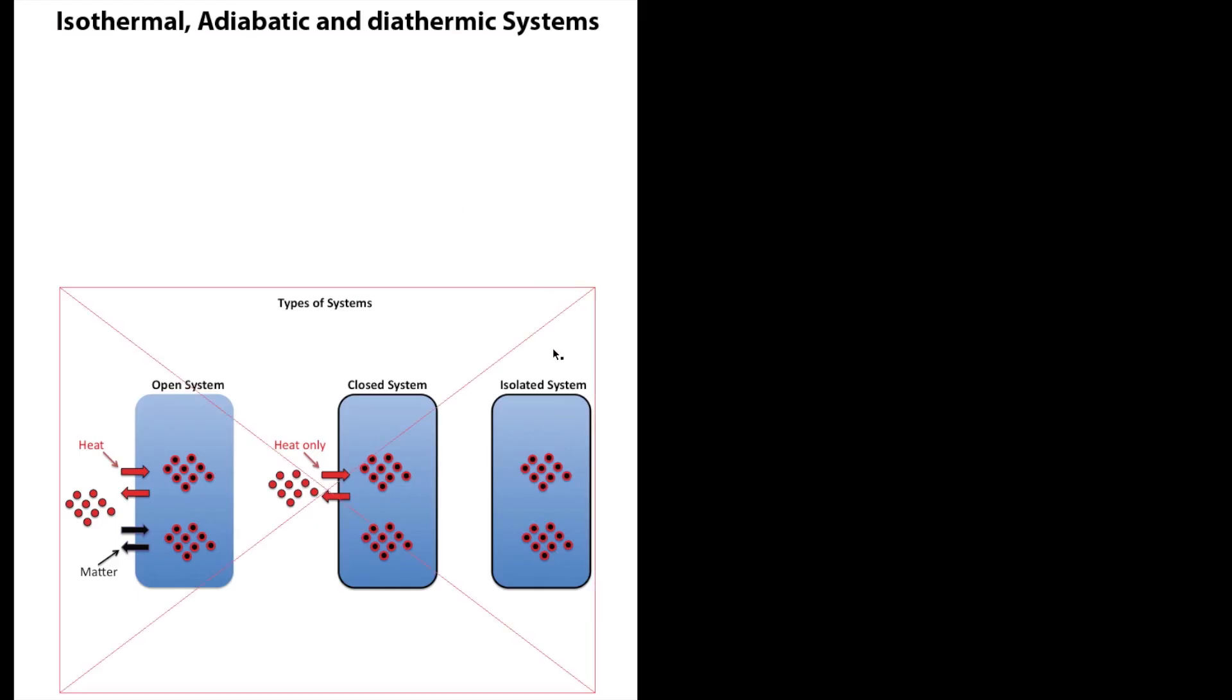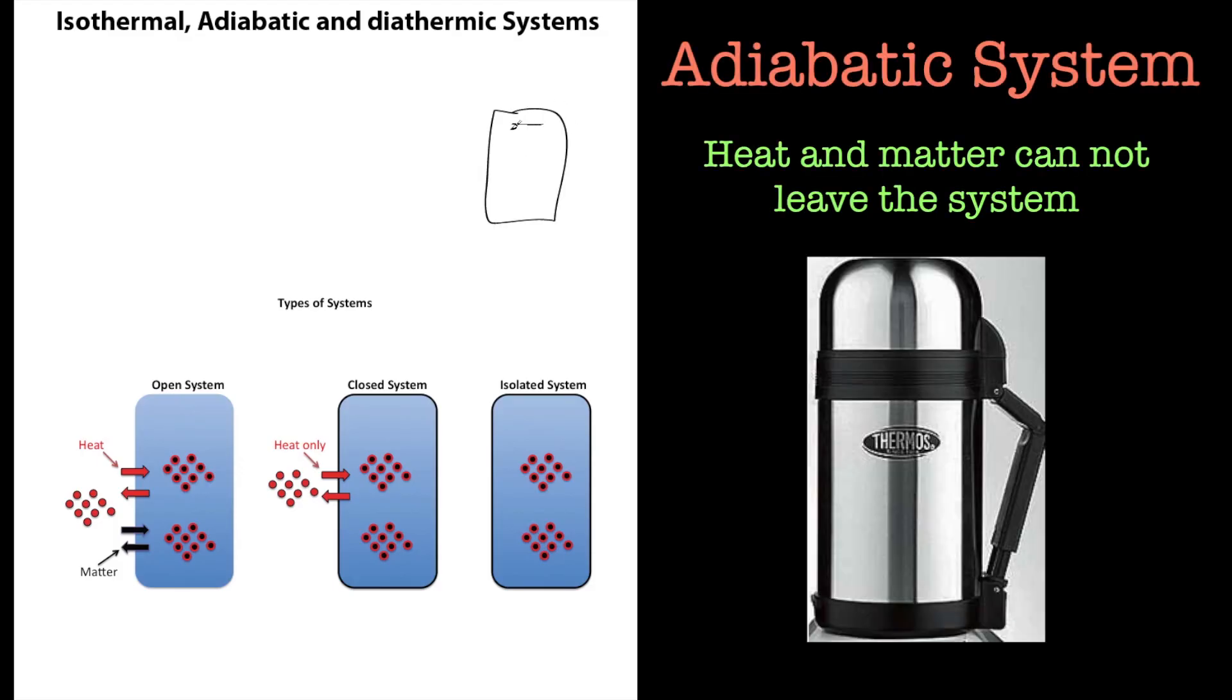So adiabatic basically means that heat does not enter or leave a system. It's a bit like the isolated system, and the best way of thinking about that is a flask, a thermos flask. But obviously in the thermos flask you don't have a reaction taking place, but heat can't get in or out, so it's an isolated system. So that's adiabatic.